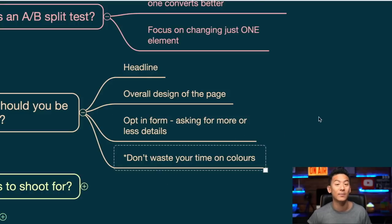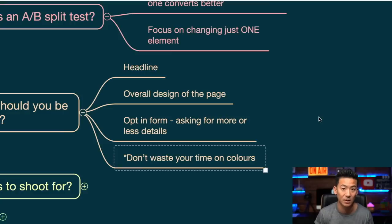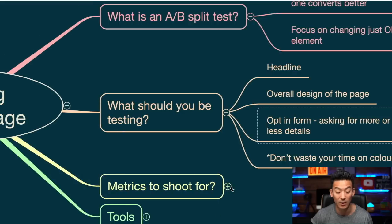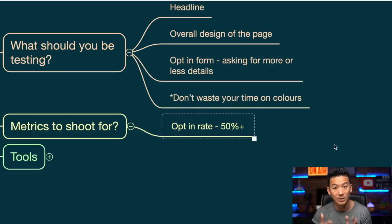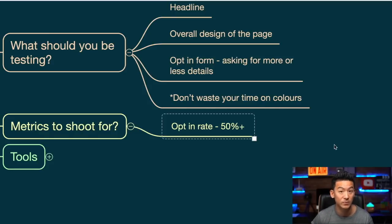Don't waste your time on split testing colors. A lot of people think that testing a blue, white, or red background is going to give better results, but if you're getting 1% extra, it's just not that much — it's not really going to move your numbers. You really want to be going for 5%, 10%, 15% extra on the opt-in rate, and the best way to move that is the headline, then the overall design, then the opt-in form. If you can get above 50% opt-in rate, that is golden. On paid ads like YouTube or Facebook ads, if you can get more than 30%, that's already pretty good.